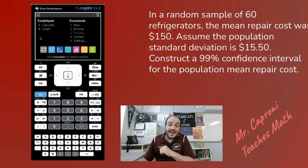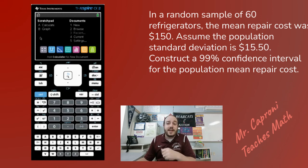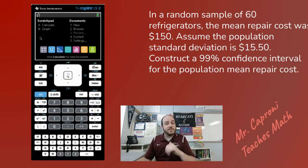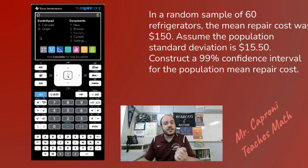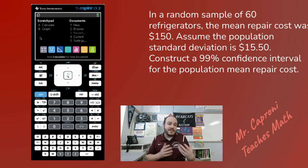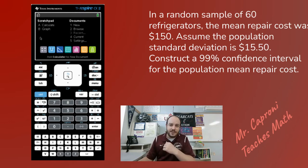Here we are with our TI-Nspire and the example we're going to be using for today. The example says: in a random sample of 60 refrigerators, the mean repair cost was $150. Assume the population standard deviation is $15.50. Construct a 99% confidence interval for the population mean repair cost. This is a standard confidence interval question, so let's go ahead and see how we're going to do it on the calculator.